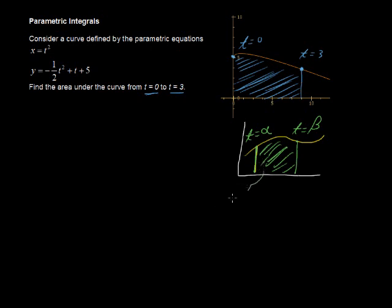This area equals the integral from alpha to beta of the y function multiplied by the first derivative of the x function. And then, of course, the integral would be with respect to t.